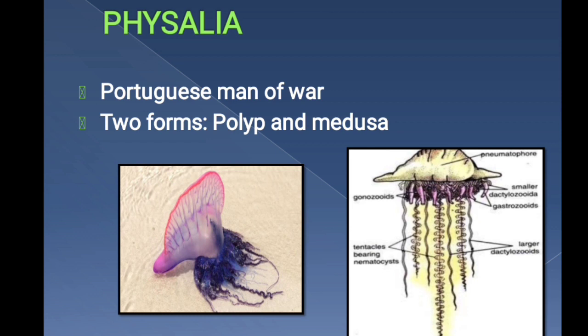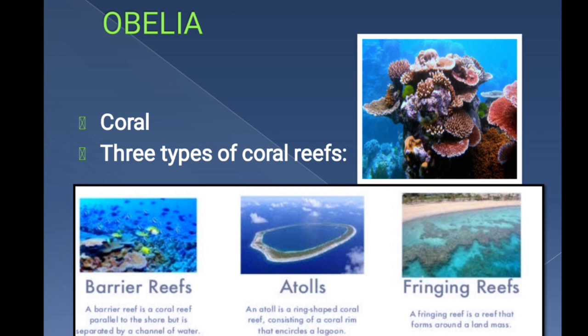Physalia is known as the Portuguese Man of War. It suddenly appears and suddenly disappears because it has a large balloon-like transparent structure known as the pneumatophore. When air fills inside the pneumatophore it provides buoyancy, and as soon as the air is ejected, it sinks — that is why it suddenly appears and disappears. An important characteristic of Physalia is that it shows two forms: the polyp and the medusa.